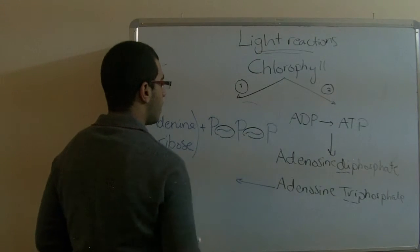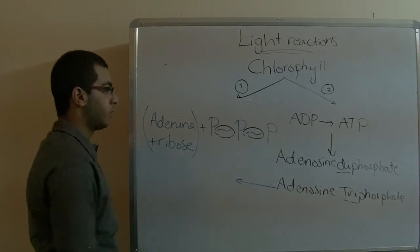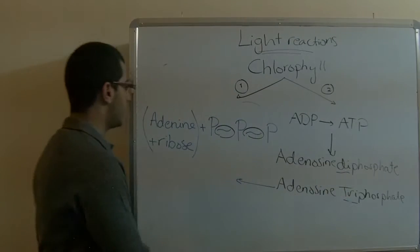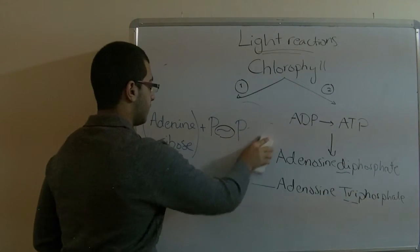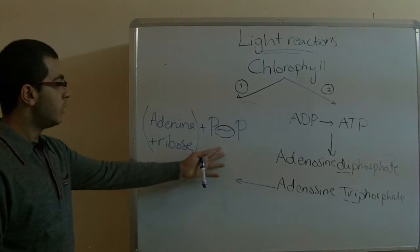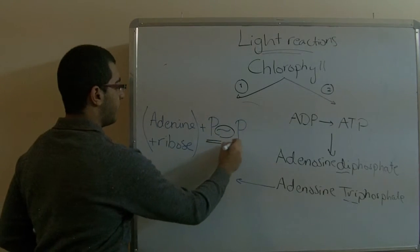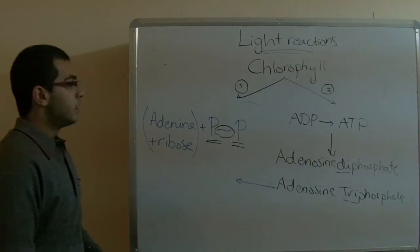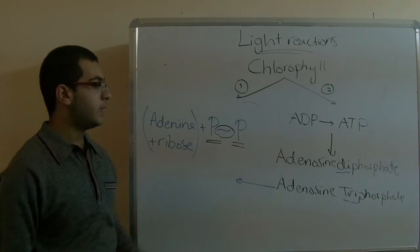These squiggles represent the linkage between the three phosphate groups. The adenosine diphosphate is the same, but we remove the third phosphate group to only have two phosphate groups. This is the structure of adenosine diphosphate and adenosine triphosphate.